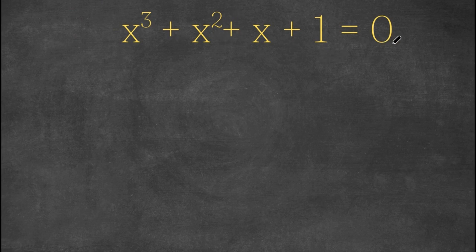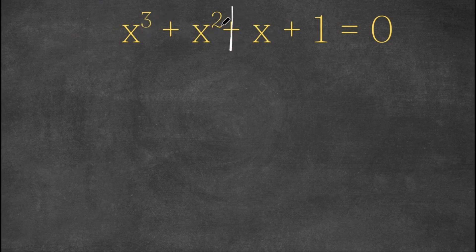So now, what we're first going to do is we're going to focus on our left side here and we're going to simplify this a little bit. So what we're going to do is we're going to divide this into two parts: x to the power of 3 plus x squared, and x plus 1. For x to the power of 3 plus x squared, we're going to factor out our greatest common factor, which in this case is x squared.